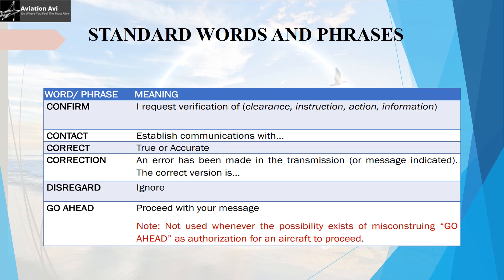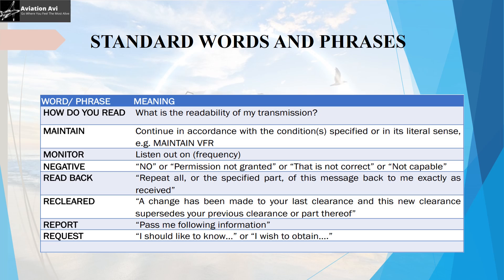The next phrase is 'go ahead', used to indicate that you may proceed with your message. This phrase should generally be avoided because of the possibility of misunderstanding it as an authorization for an aircraft to proceed. 'How do you read' is used to confirm the readability of transmission. 'Maintain' means continue in accordance with the conditions specified — for example, 'maintain VFR' means the aircraft must maintain visual flight rules.